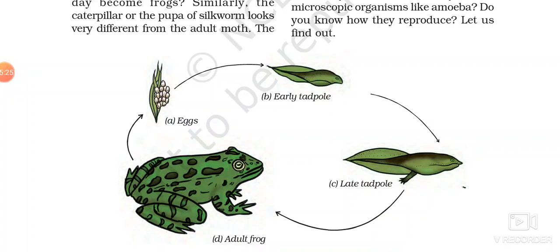Later on, these tadpoles will develop a tail and fins. Then they will develop hind legs — hind means lower legs. First they will develop lower legs. Then almost by 8 weeks, they will develop hind legs. Then by 12 weeks, they will develop front legs. And after the development of front legs, their fins and tail will disappear. The tail of the frog will disappear.